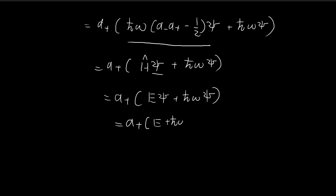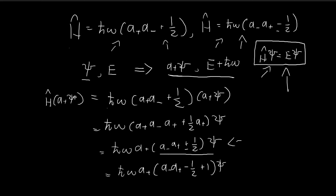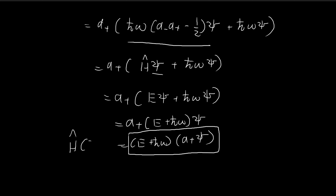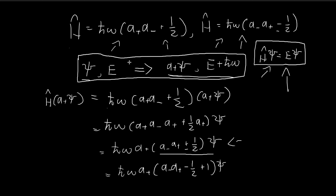Here I'm assuming ψ is a function that satisfies the Schrödinger equation, so I can apply that relationship directly. The Hamiltonian operator applied to ψ gives the energy level times the function itself. Grouping up the constants, and since they are constants I can shift the a-plus operator to the right — and there we have it. We've proved that the Hamiltonian applied to a-plus ψ equals E plus ℏω times a-plus ψ, which is exactly the Schrödinger equation with energy level E plus ℏω.